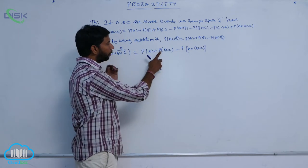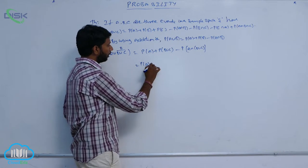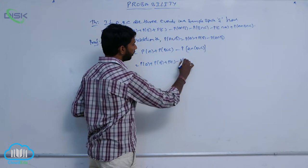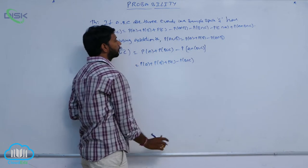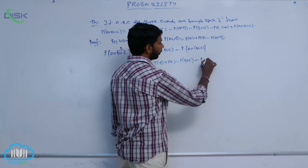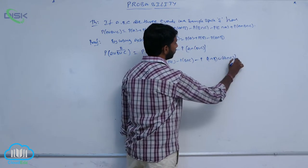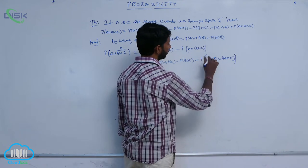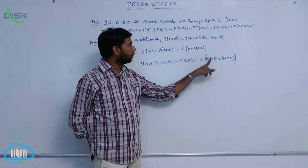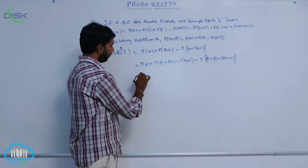P of A intersection of B union C is again of the form P of B union C. This is equal to P of A plus P of B plus P of C minus P of B intersection C, minus P of A intersection B union A intersection C. By using distributive property, P of A intersection of B union C can be written as P of A intersection B union A intersection C.